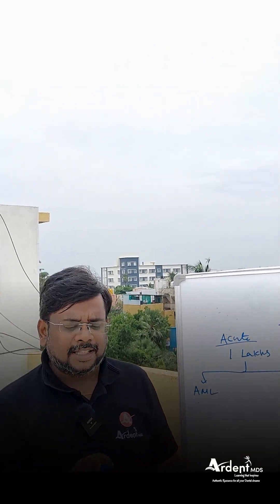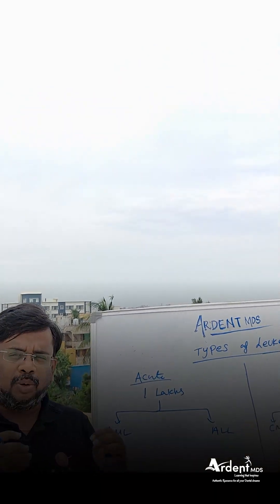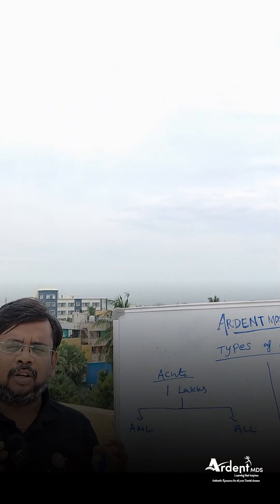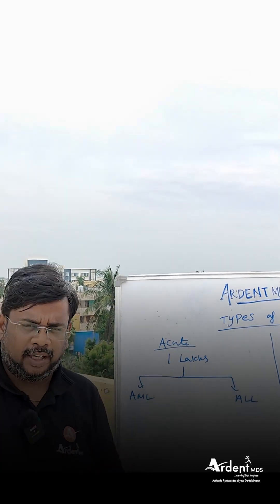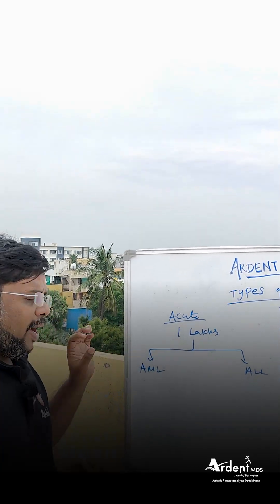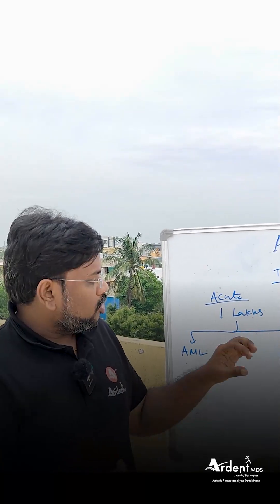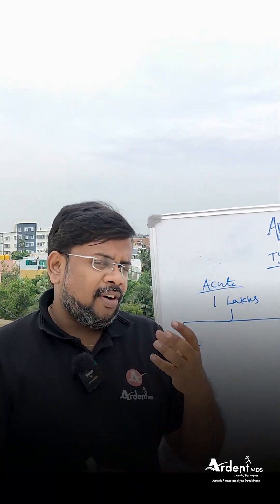What is the meaning of myeloid series? Myeloid series refers to neutrophils, eosinophils, and basophils — when these cells excessively proliferate, that is called myeloid leukemia.